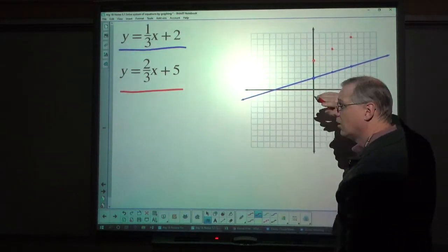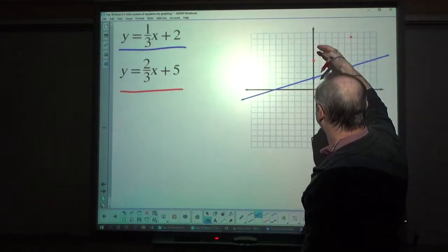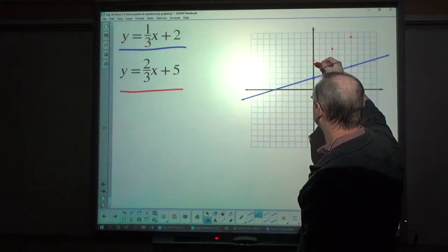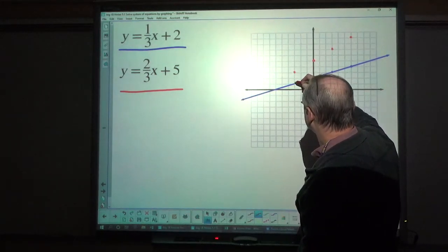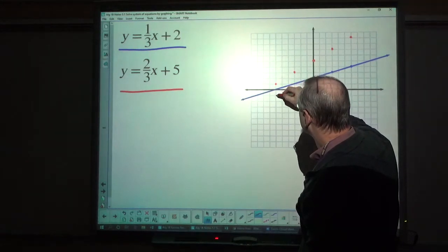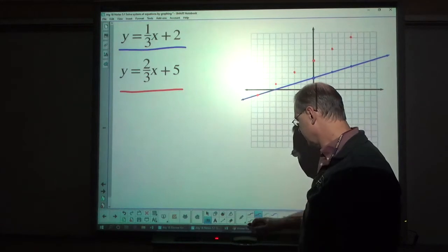Now remember, it also works in reverse. So if you're going up 2 to the right 3, you could go down 2 and back 1, 2, 3. Down 2, 1, 2, 3. Down 2, 1, 2. Oh, look at that, nice solution.